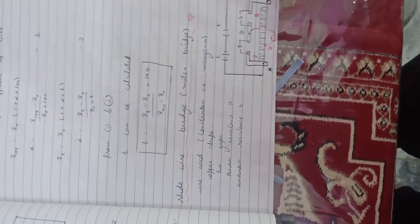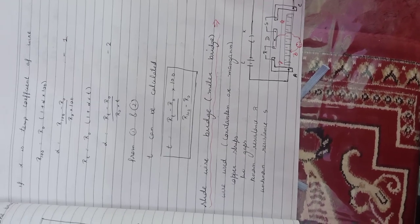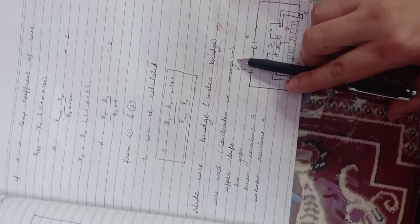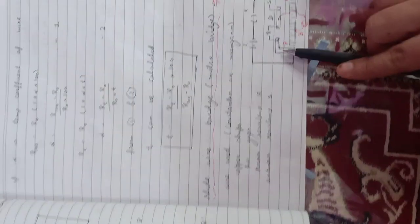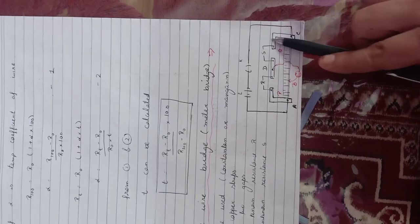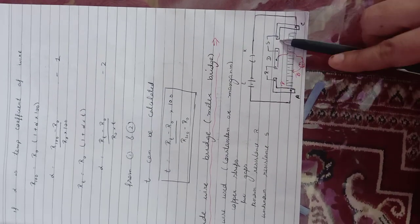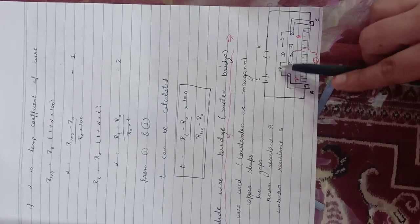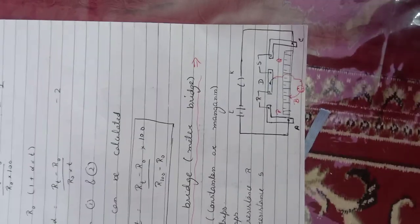The next topic is the slide wire bridge or meter bridge. It is a practical example of the Wheatstone bridge we studied earlier. In this, we use constantan and manganin wire, because they have very low temperature dependence. Copper strips are used — these L-shaped strips are made of copper, and there is a gap between them to adjust the known resistance R and the unknown resistance S.